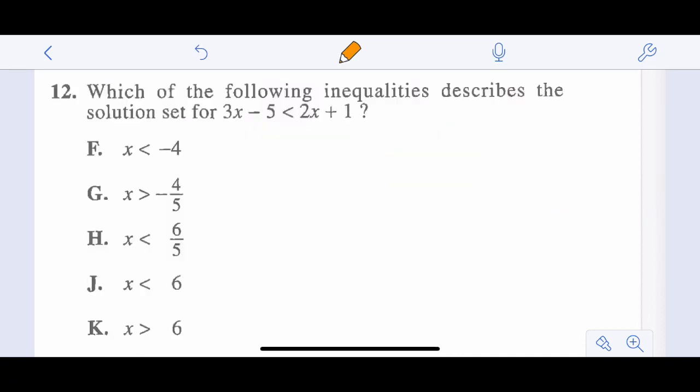Which of the following inequalities describes the solution set for 3x minus 5 is less than 2x plus 1. So let's just subtract 2x from both sides to get our components together. And now we have x, and we'll add 5 to both sides. So x is less than 6. We did not have to flip the sign because we didn't divide or multiply by negative. So x is less than 6, choice J.